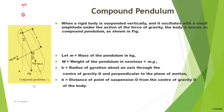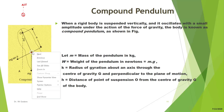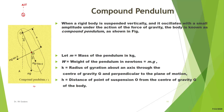This compound pendulum is shown in the figure. Let m be the mass of the pendulum in kg, W the weight equal to mg, and k the radius of gyration about an axis through the center of gravity G. The distance h is the distance from the point of suspension O to the center of gravity G. The gravitational force mg acts through the center of gravity in the downward direction.